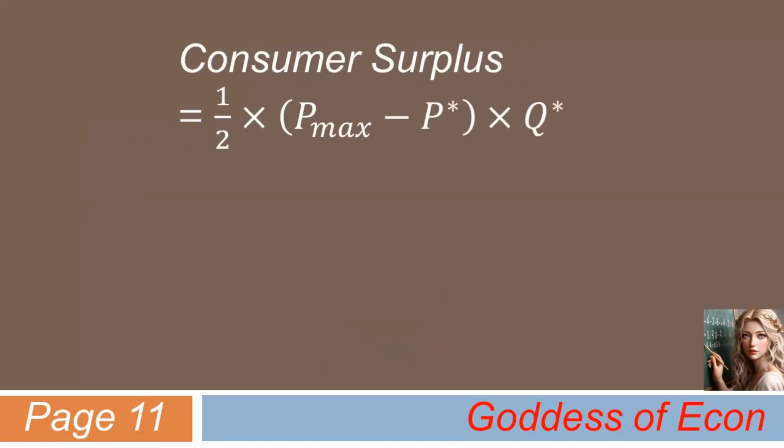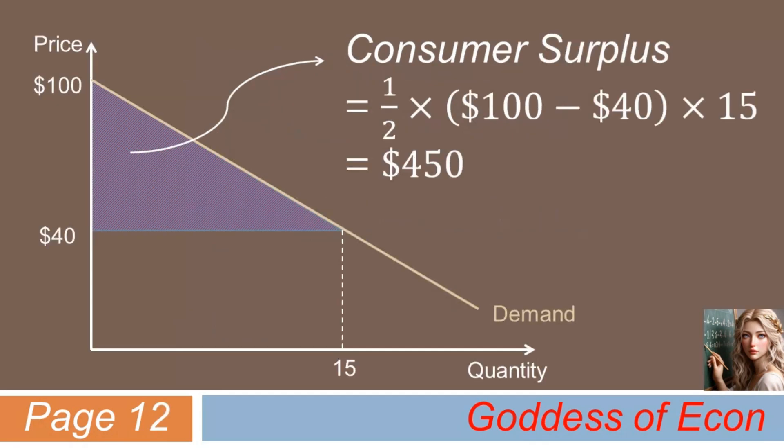And since consumer surplus is one-half times P max minus P star times Q star, it can be calculated as one-half times $100 minus $40 times 15. This equals $450. Simple, wasn't it? And if we depict consumer surplus graphically, we can see that it is the triangular area under the demand curve.